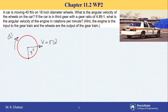So 40 feet per second equals radius, which is in inches, so I want to divide by 12 to have it in feet. Therefore, this can be solved for omega of the wheels.